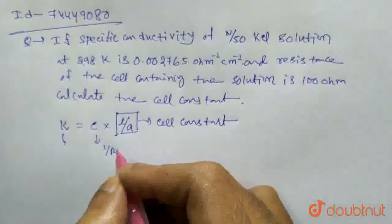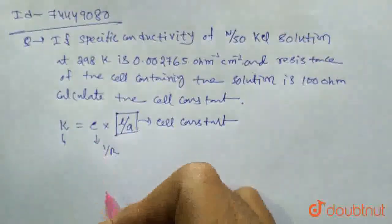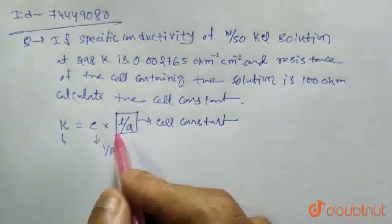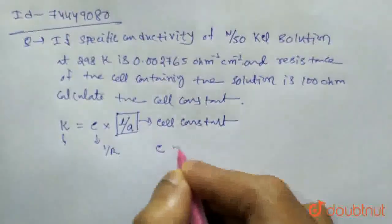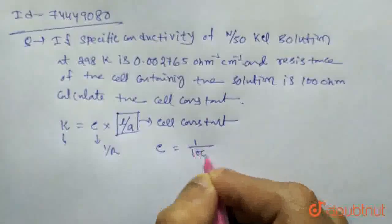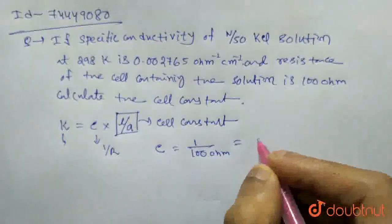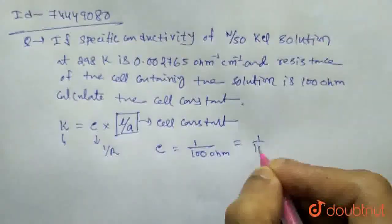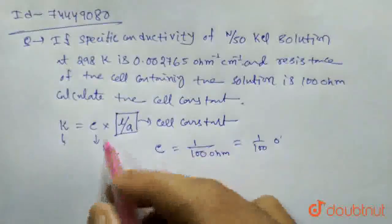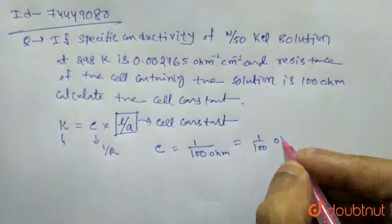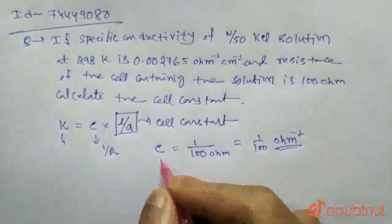Resistance is the reciprocal of conductance. Since the resistance is given as 100 ohm, conductance equals 1 by 100 ohm. So this is our conductance.